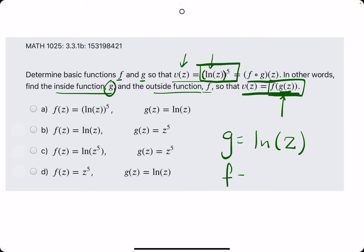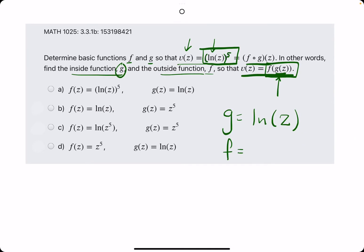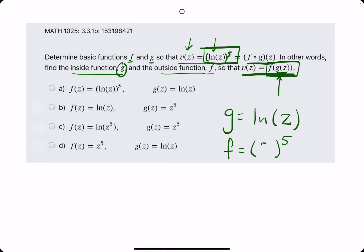So what does that leave on the outside? Well, the outside, really all we have on the outside is the fifth, something to the fifth. And so we just need to figure out what the variable for the function f is, and it looks like they just left it as z in this case. So we just have something to the fifth, and g has been plugged into that something to give us ln of z all to the fifth.